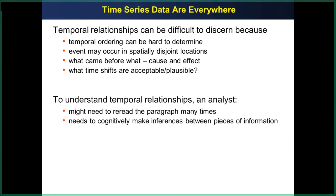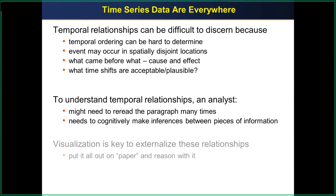To understand the temporal relationships, you may have to read the story many times and figure out what goes together and which may be cause and effect over time. A good way to do this is to take the story written in text and make it a visualization — put it all on paper and reason with it. Take text or facts on paper and look at what they look like together.